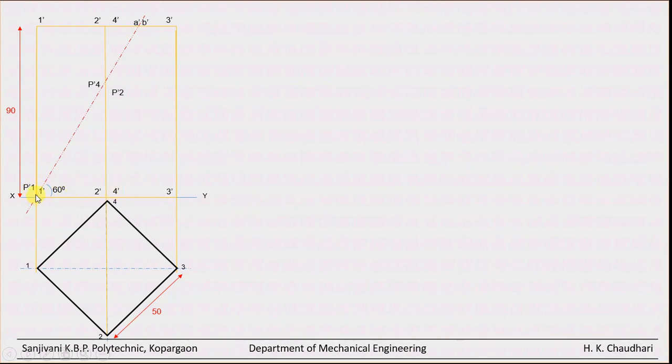Now just locate the points P dash 1, P dash 2, then P dash 4, where this section plane cuts the vertical edges of the prism. Now for this edge number 3, there is no cut by the section plane. So there is no point P dash 3. But the section plane intersects the top surface here.